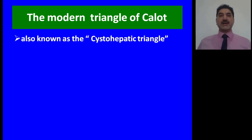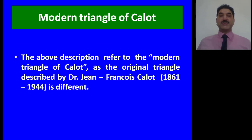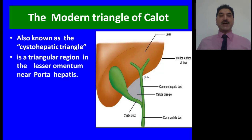The modern triangle of Calot is also known as the cystohepatic triangle. This triangle is very important surgically. It is a triangular area found within the lesser omentum near the porta hepatis. The above description refers to the modern triangle of Calot, as the original triangle described by Jean-François Calot is different.